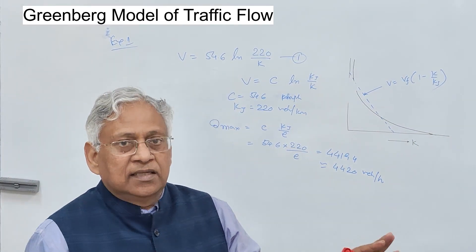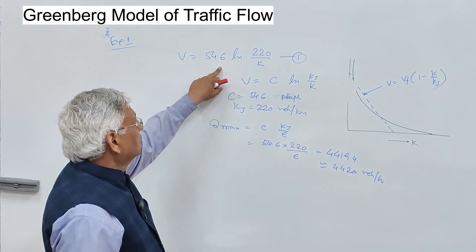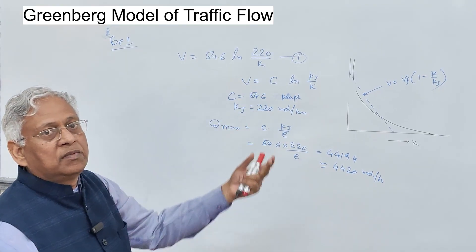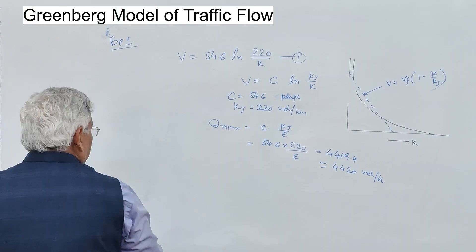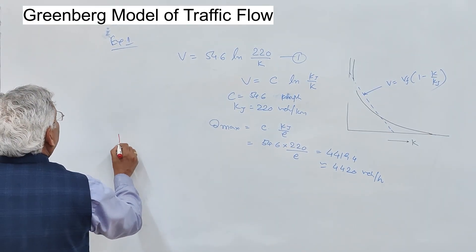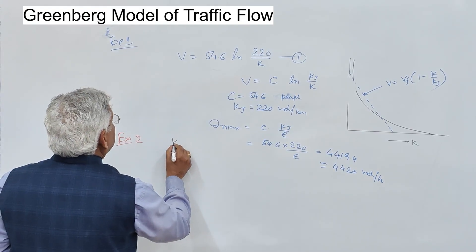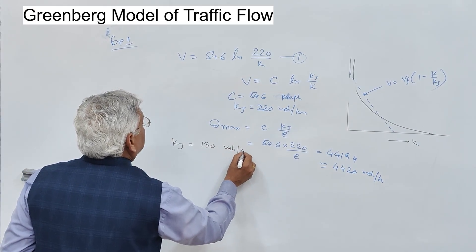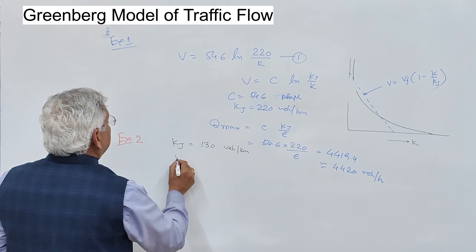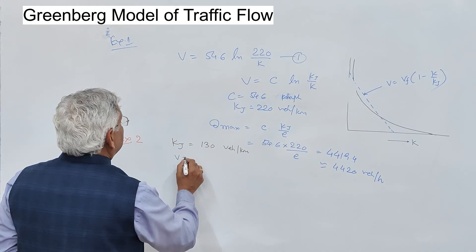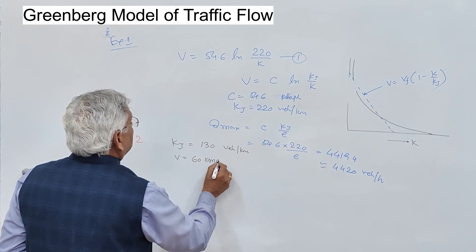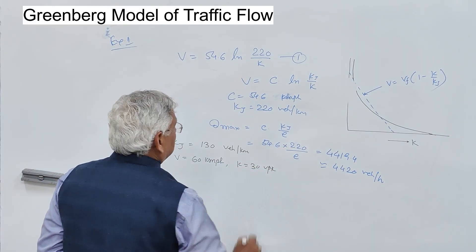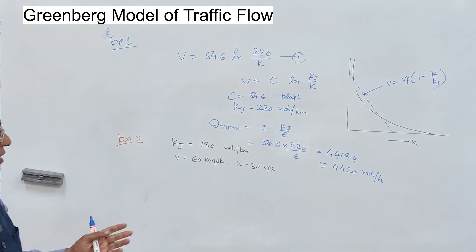If you want to find the speed at any other density — because you now know the equation — you can find the space mean speed at any density, say 30 vehicles per kilometre. Example 2: The jam density on a section of highway is 130 vehicles per kilometre, and the speed at a density of 30 vehicles per kilometre is 60 kilometres per hour. What is the capacity of this section?